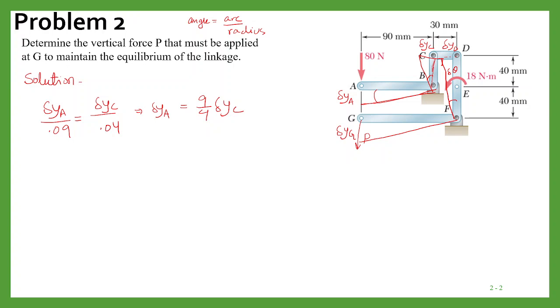So similarly, we can obtain for other equations also. Now delta y_d, this should be equal to delta y_c, and again this will be equal to, if we can write in terms of a, then 4 by 9 delta y_a. So this is another equation which we can write.